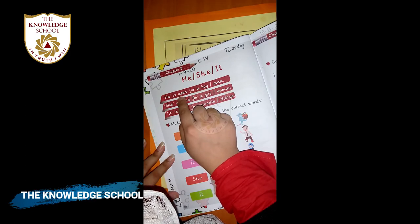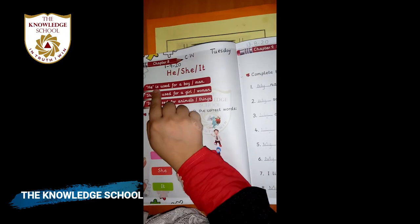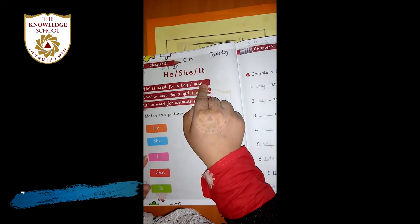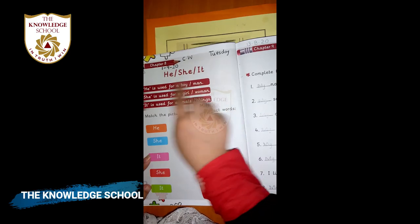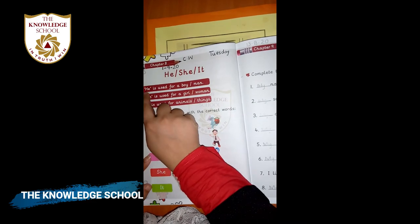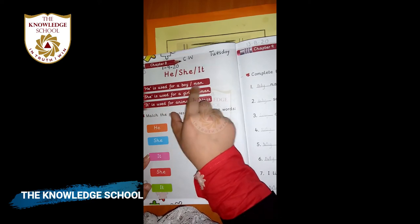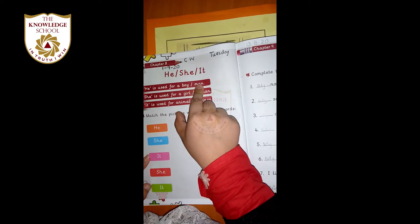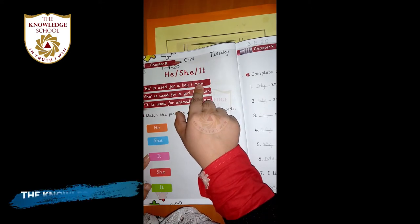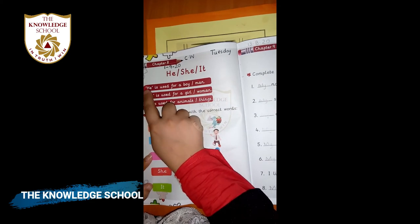He is used for a boy or man. He ہم کس کے لیے use کرتے ہیں — جب ہم کسی boy یا man کے بارے میں بات کر رہے ہوں تو ہم he use کرتے ہیں۔ When we talk about a boy or a man, we use 'he'.